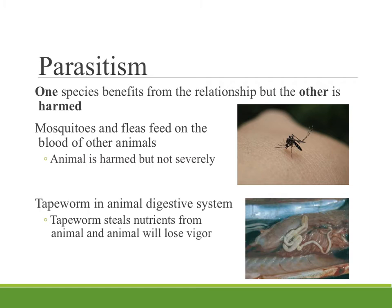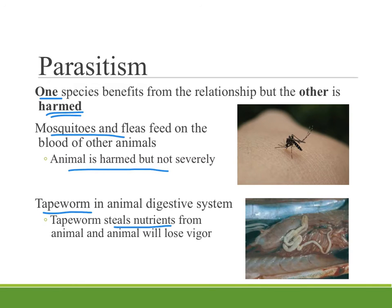The last category of symbiosis is parasitism, where one species benefits but the other is harmed. Mosquitoes and fleas feed on the blood of other animals — the parasite benefits greatly from the nutrition while the host experiences the annoyance of bites without severe harm. A more harmful example is a tapeworm living in an animal's digestive system. Tapeworms lack their own digestive system and steal pre-digested nutrients from the host, causing the animal to lose vigor and become unhealthy, though it will not usually die initially from the infestation.